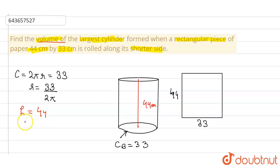Now the formula of the volume of the cylinder is πr²h. Substituting the value, π into 33 into 33. Or if you want, you can simplify this as 33 into 2 into 22 into 7.